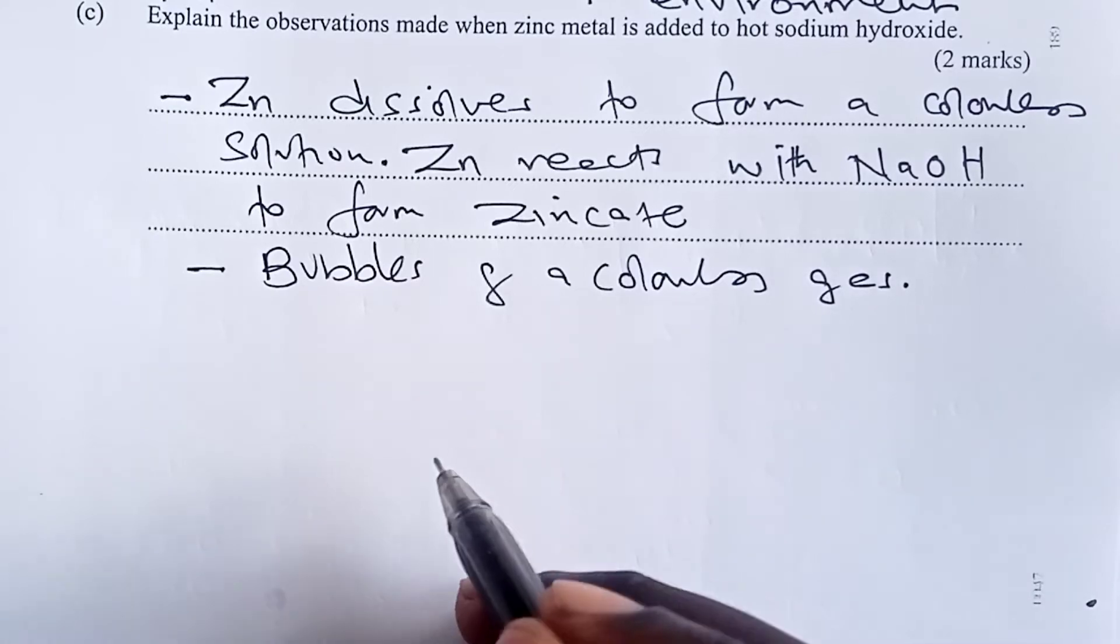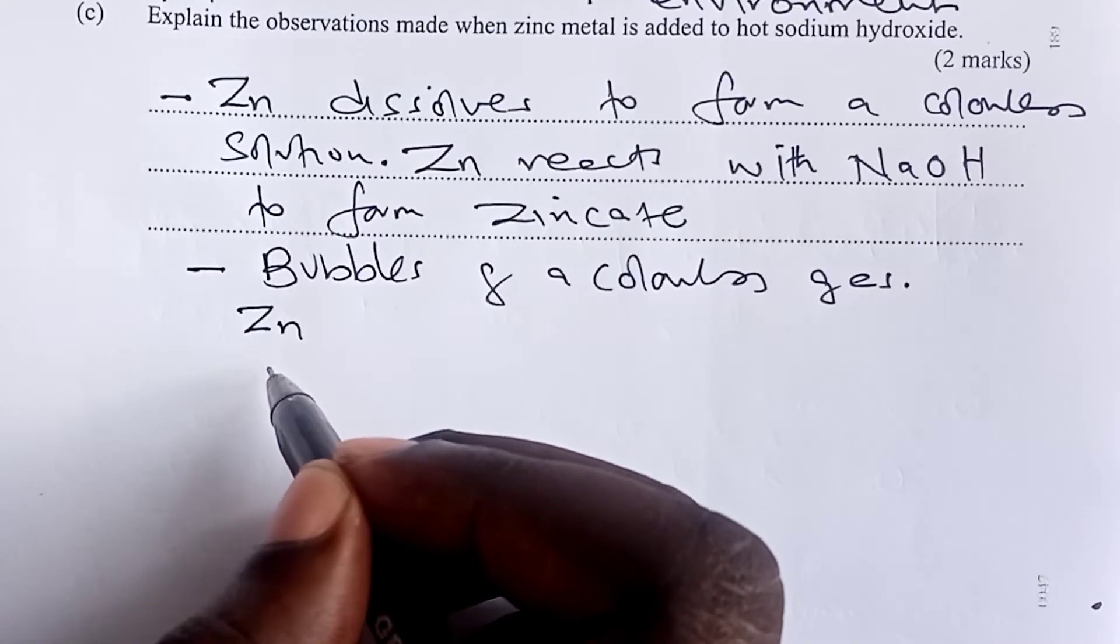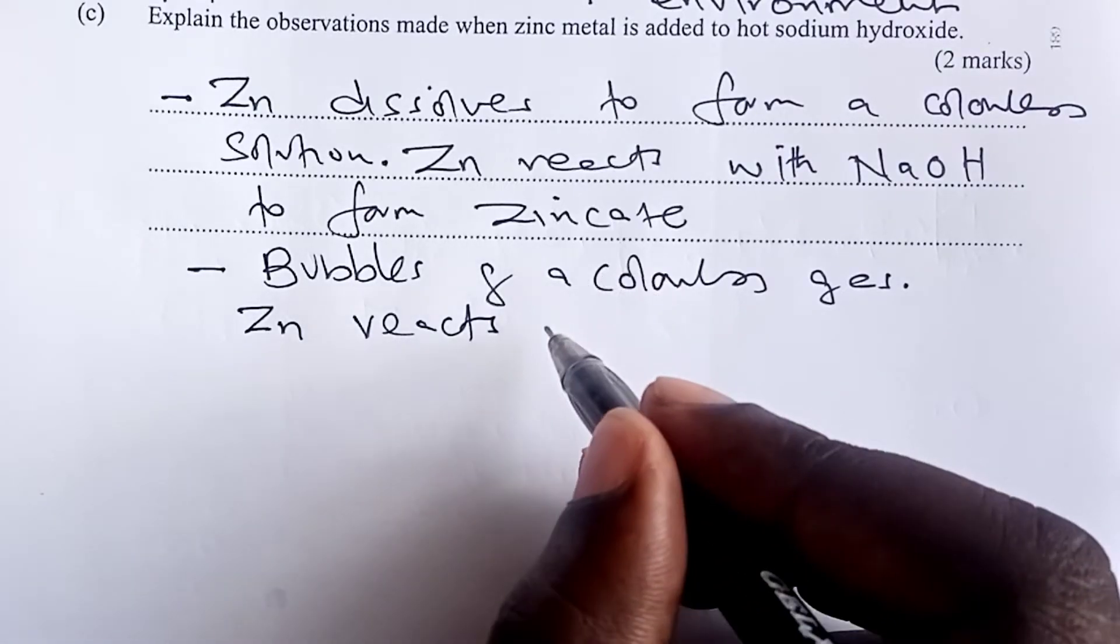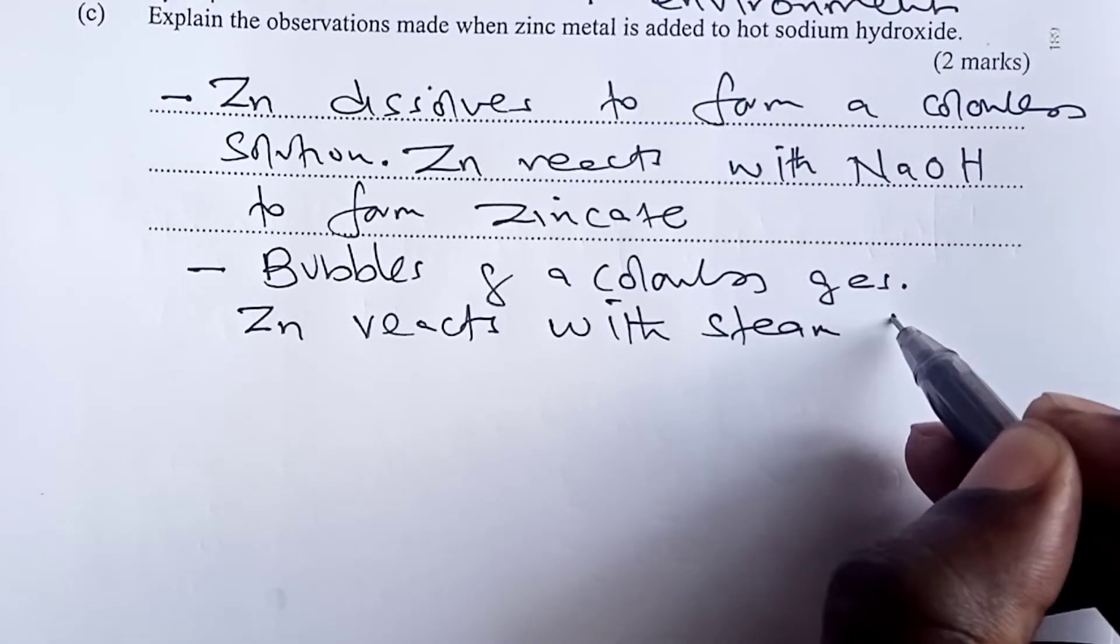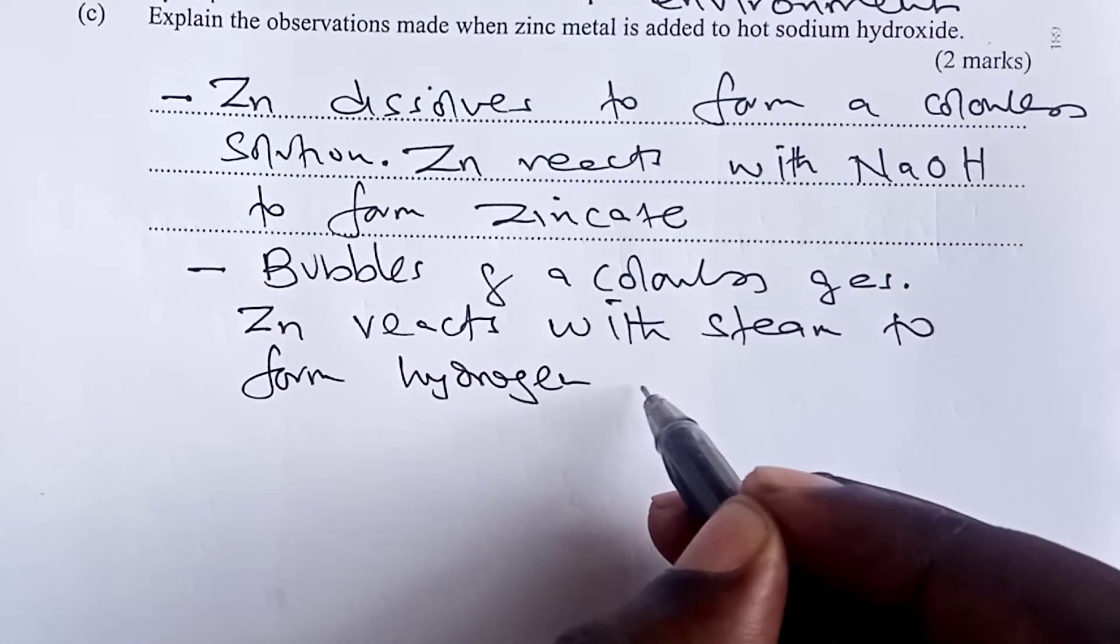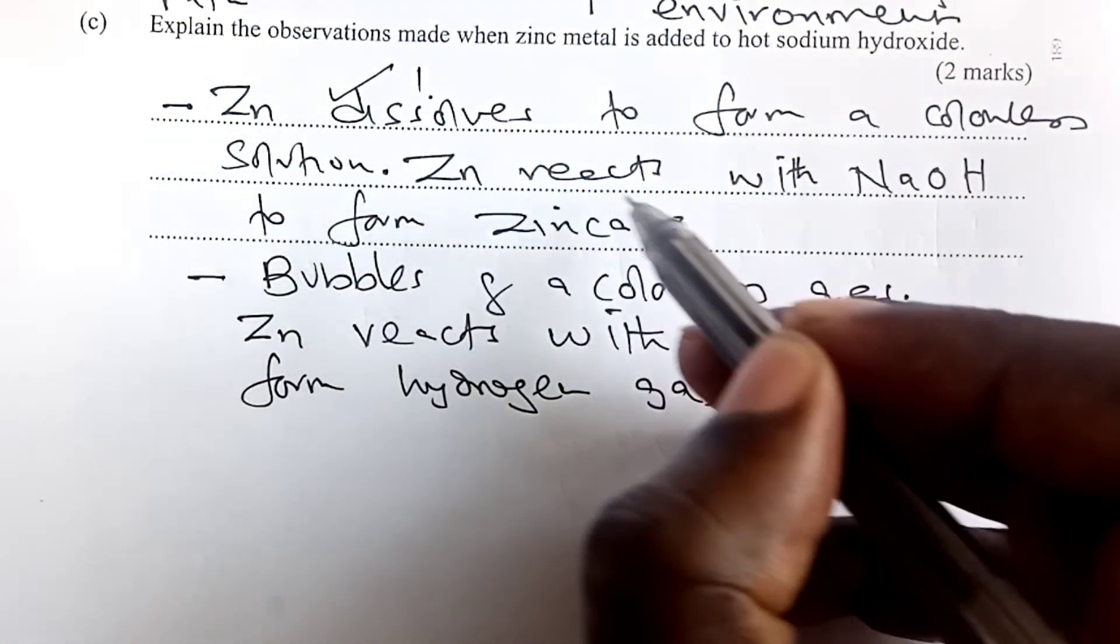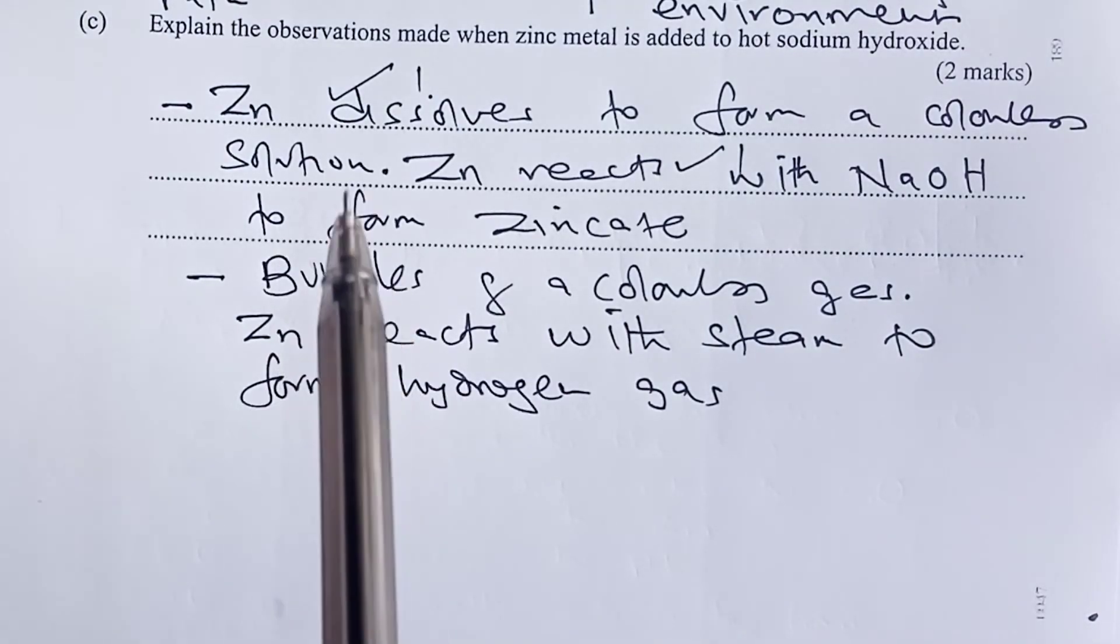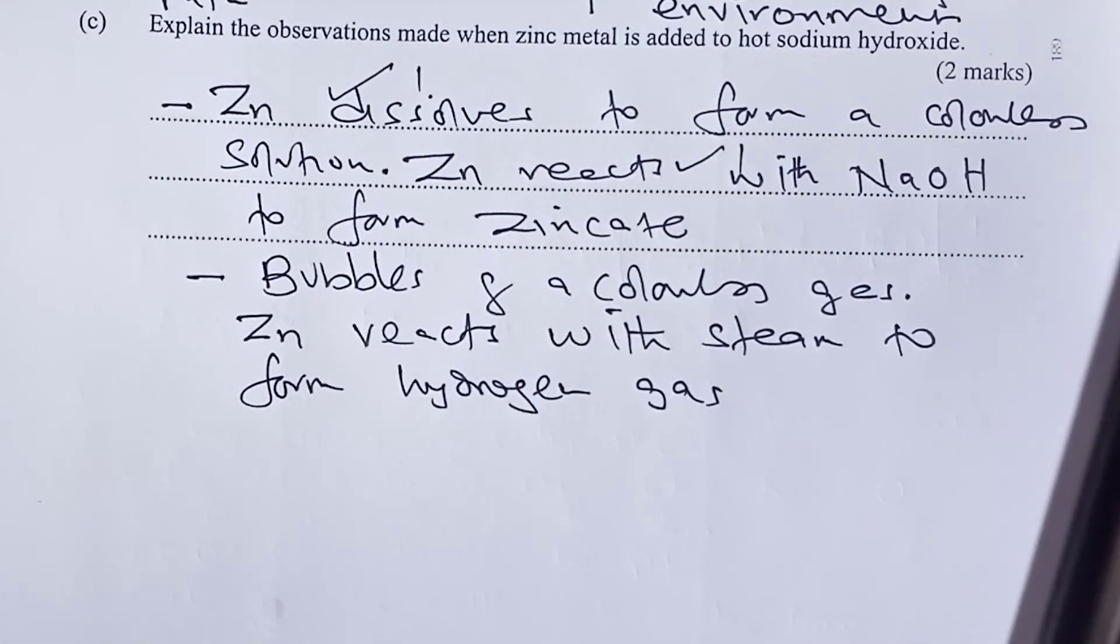The second observation would be that bubbles. We are able to see bubbles of a colorless gas. And why we are able to see bubbles is that, remember, our sodium hydroxide is hot, which means there would be production of some steam. So zinc would react with the steam to form hydrogen gas. So these are the possible two observations. Of course, the observation one mark and the reason one mark. So a student had those two options, either telling us that zinc dissolved to form a colorless solution or bubbles of a colorless gas would be seen.